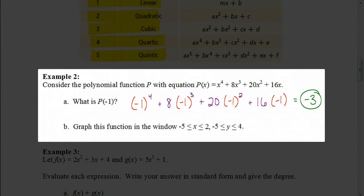So now let's look at how we would graph this. Before we do that, let's look at the instructions. It says graph this function in the window negative 5 is less than or equal to x, which is less than or equal to 2, and negative 5 is less than or equal to y, which is less than or equal to 4. That is referring to our window setting.